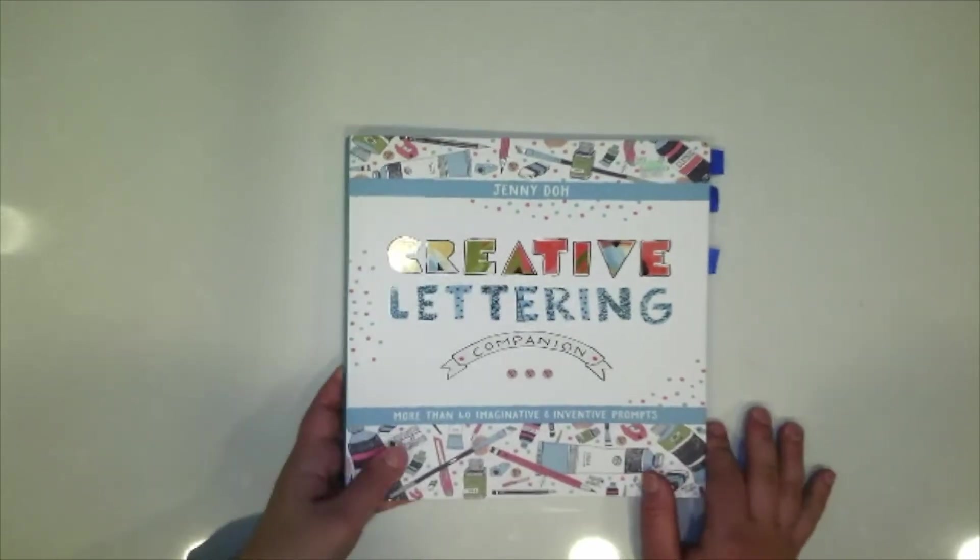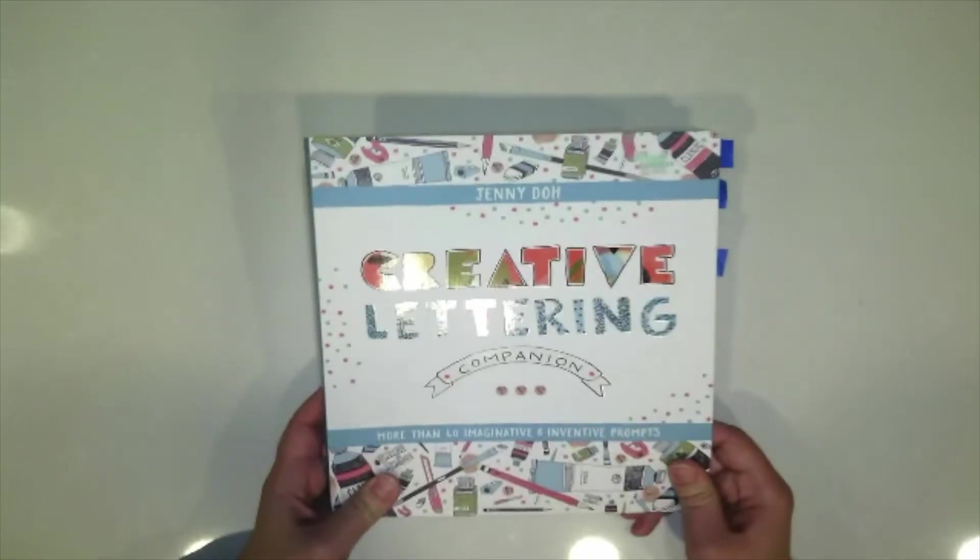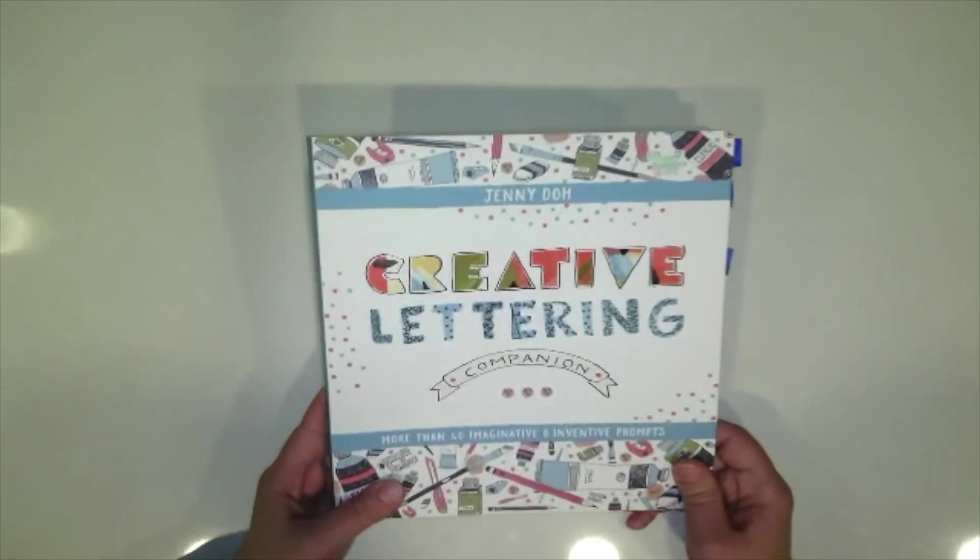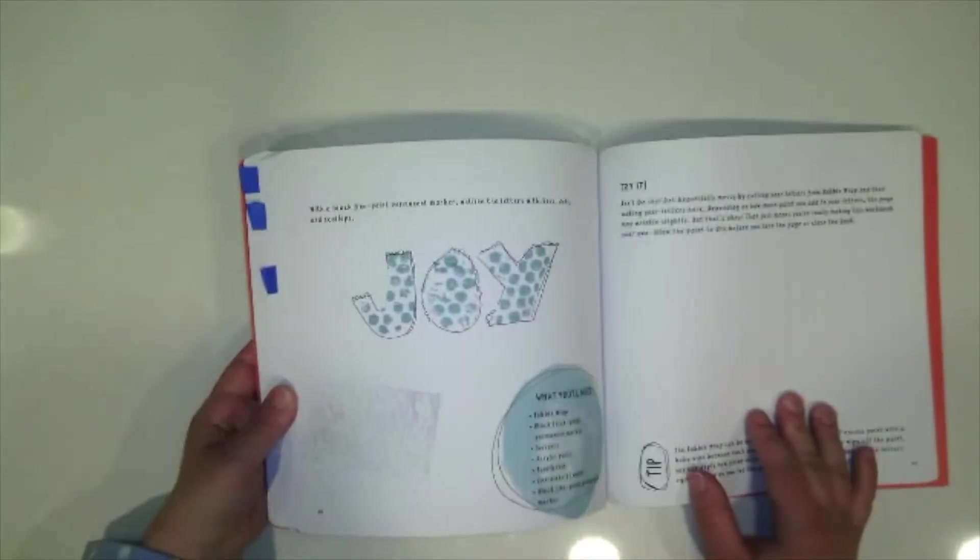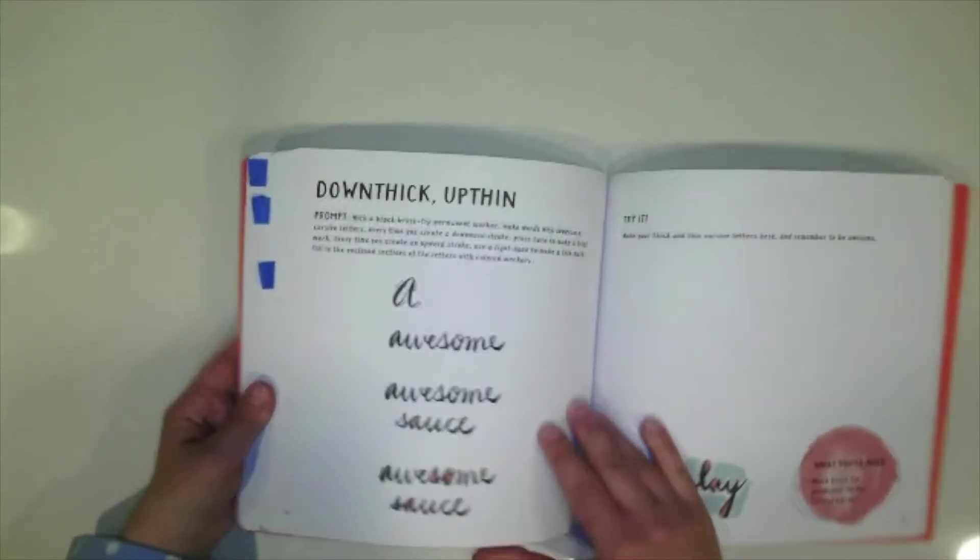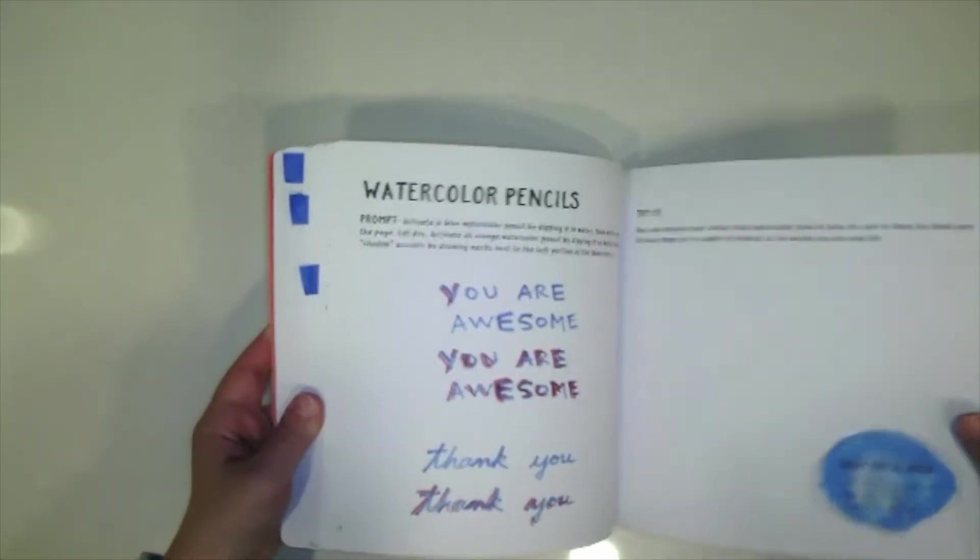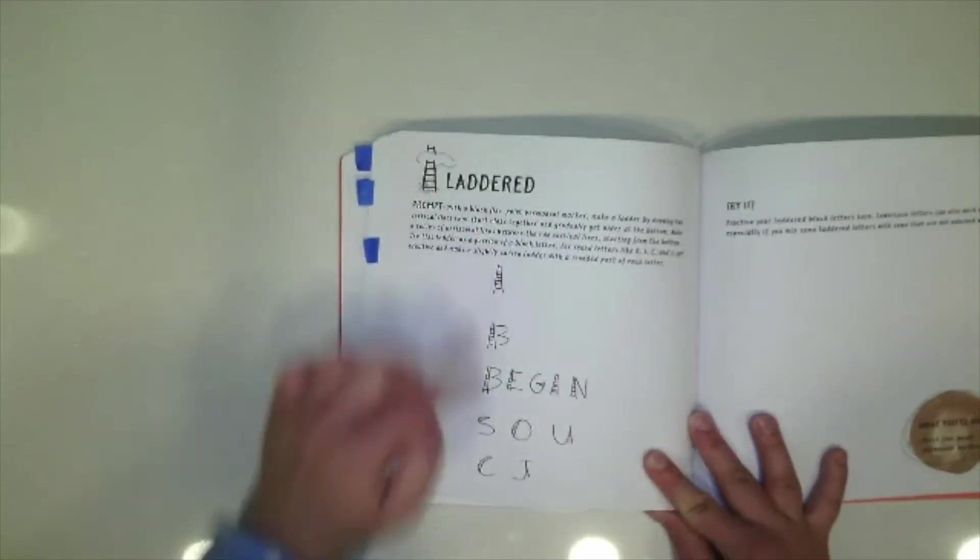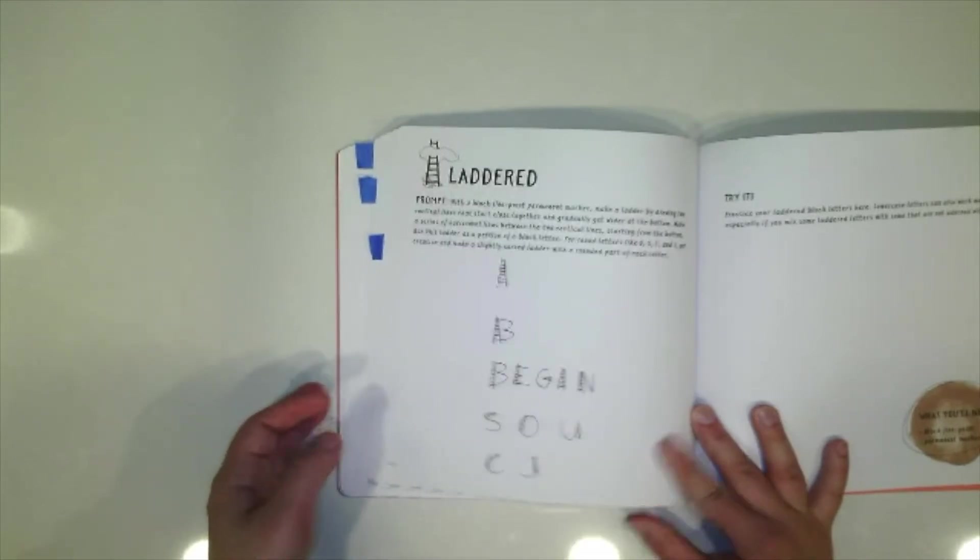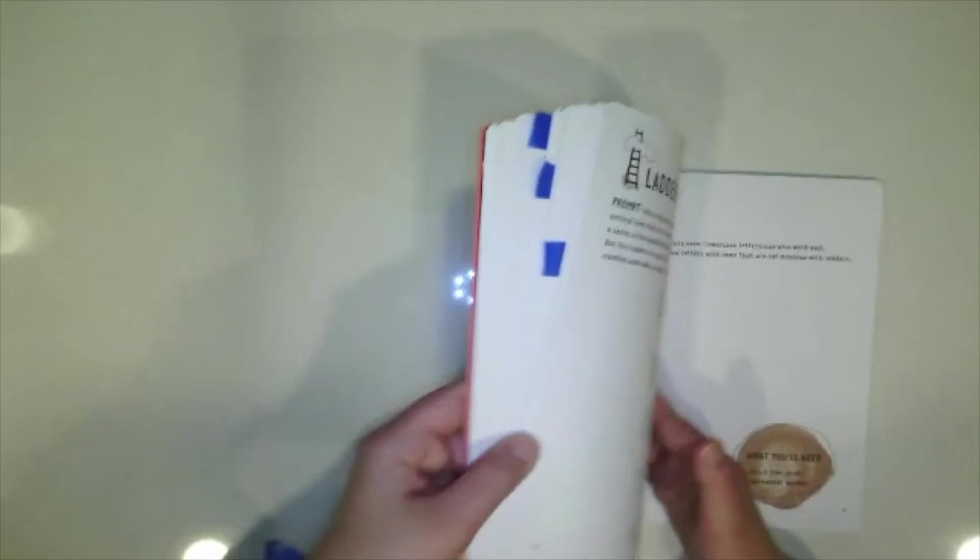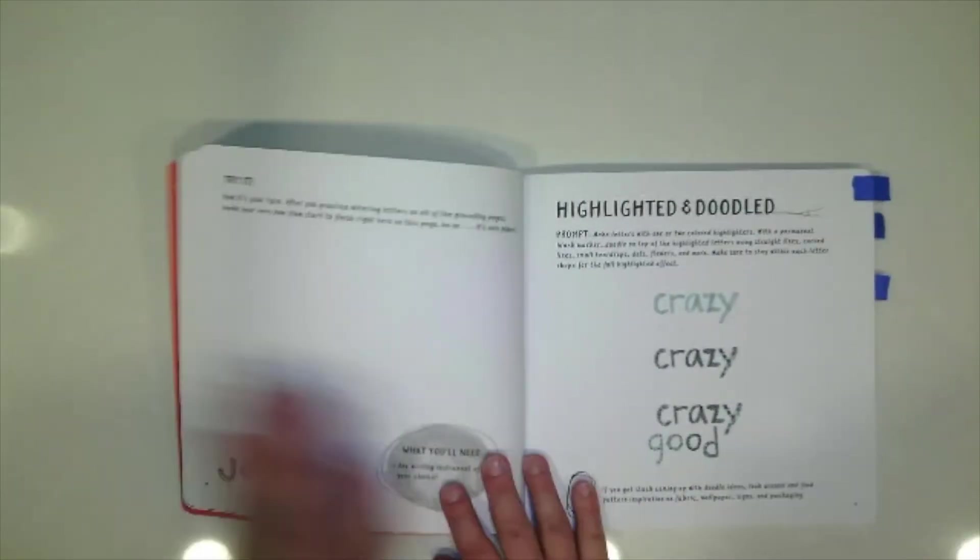Before the stores closed I picked up this book called Creative Lettering Companion by Jenny Doe and in the book she has some really fun ideas for different ways to write words. Some are really out of the box, creative. You can see this one has a ladder in it where the first part of each letter has a ladder built in. But I'm going to show you three of mine that are my favorite.